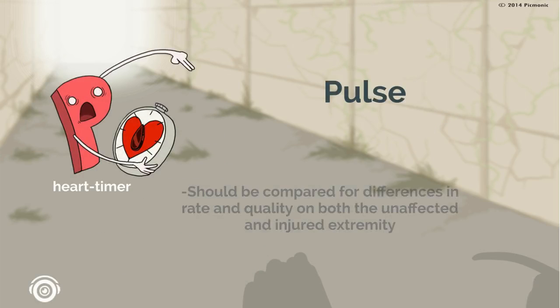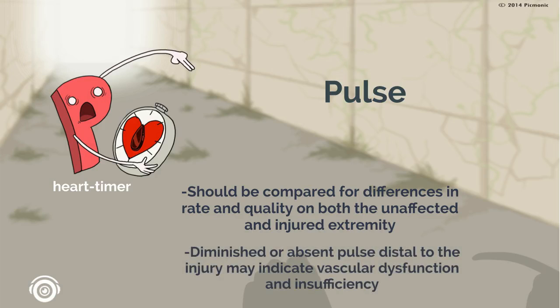Pulses should be compared for differences in rate and quality on both the unaffected and injured extremity. A diminished or absent pulse distal to the injury may indicate vascular dysfunction and insufficiency and should be reported immediately to the provider. Pulse is represented by the heart timer.